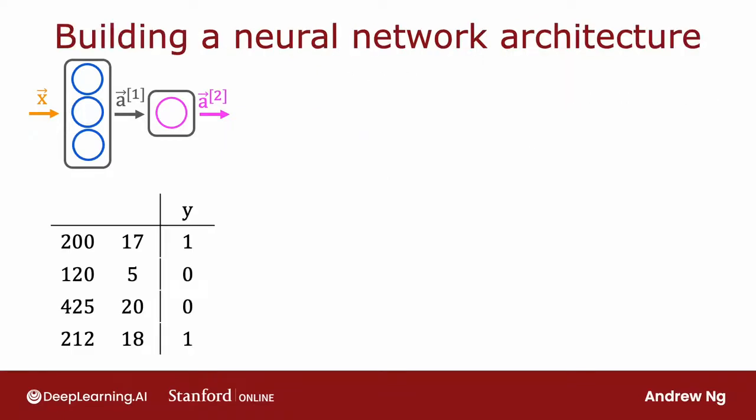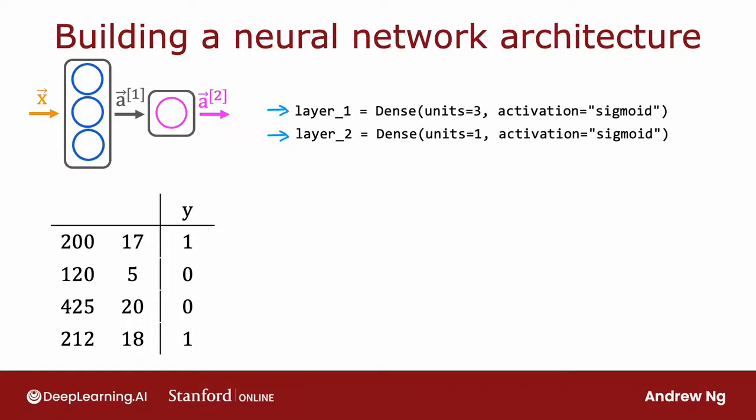It turns out that TensorFlow has a different way of implementing forward prop as well as learning. Let me show you a different way of building a neural network in TensorFlow, which is that, same as before, you're going to create layer one and create layer two. But now, instead of you manually taking the data and passing it to layer one, and then taking the activations from layer one and passing it to layer two, we can instead tell TensorFlow that we would like it to take layer one and layer two and string them together to form a neural network. That's what the sequential function in TensorFlow does, which is it says, Dear TensorFlow, please create a neural network for me by sequentially stringing together these two layers that I just created.